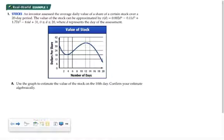You see it represented as V of D is 0.002 times D to the fourth power, blah, blah, blah. And D represents the day of the assessment and V is the value of the stock. So what you're being asked in part A of this problem is to use the graph to estimate the value of the stock on the 10th day.